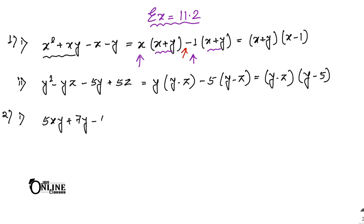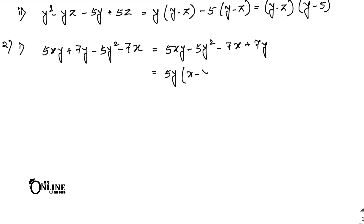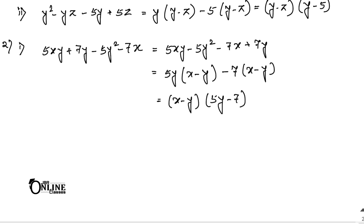Number 2.1: 5xy + 7y - 5y² - 7x. First rearrange as 5xy - 5y² - 7x + 7y. From the first two, common 5y giving 5y(x - y). From the next two, common minus 7 giving minus 7(x - y). So the factors are (x - y)(5y - 7).